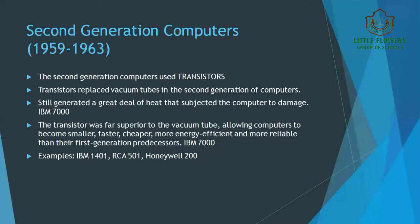We have various examples of the second generation computers: IBM 7000, IBM 1401, RCA 501, and Honeywell 200. There was another problem — they could be used only for selected purposes. And as we all know, they were very expensive.